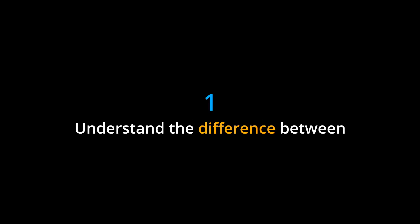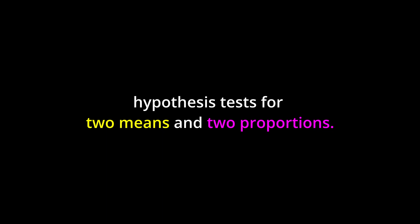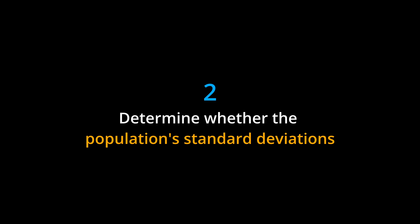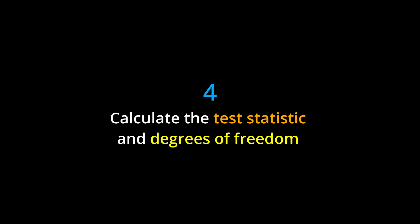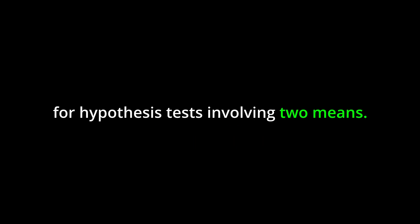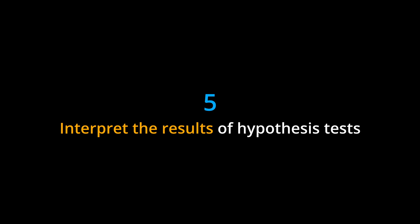Learning Objectives. By the end of this chapter, you should be able to: 1. Understand the difference between hypothesis tests for two means and two proportions. 2. Determine whether the population's standard deviations are known or unknown. 3. Identify the appropriate distribution to use for hypothesis testing. 4. Calculate the test statistic and degrees of freedom for hypothesis tests involving two means. 5. Interpret the results of hypothesis tests and draw conclusions based on the data.